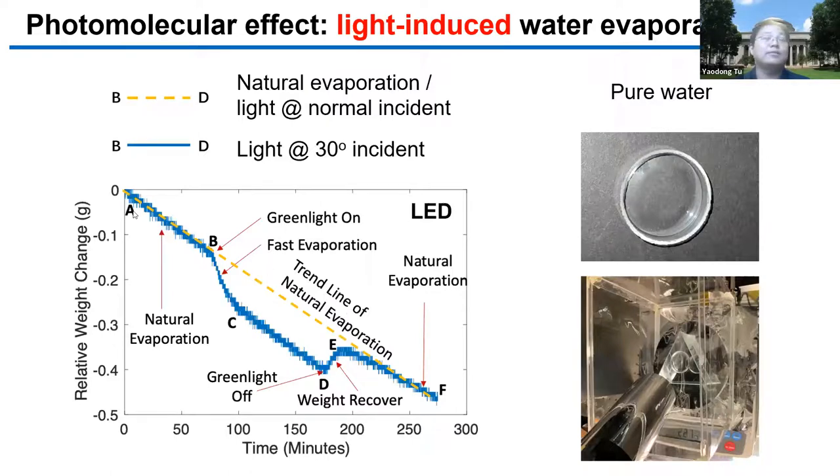So this is the evaporation curve. At the beginning, from A to B, the light is off, so it's natural evaporation. At point B, we turn on the light, and you can see the evaporation rate suddenly increased but gradually decreased. From C to D, the evaporation under light is almost the same as the natural evaporation.